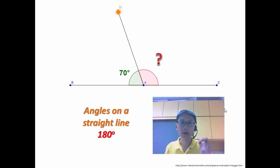For this, you need to just remember that angles on a straight line is equal to 180 degrees. Once you remember that and you know this concept, it's very easy to find the unknown angle.